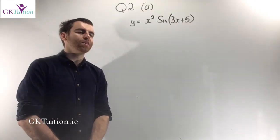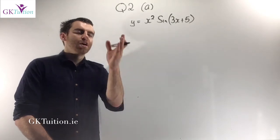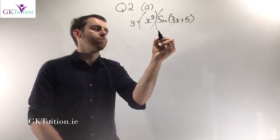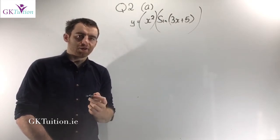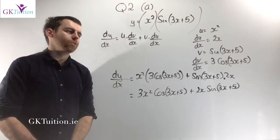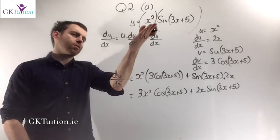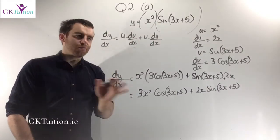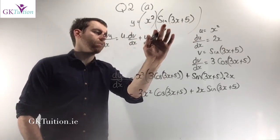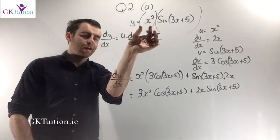The first part of question 2 asks you to get the derivative of x squared times sine of 3x plus 5, worth five marks. You have one variable x squared multiplied by another variable sine 3x plus 5, so you use the product rule. Some students grouped x squared with the sine — you must never split sine from its angle. Sine, cos, or tan — whatever comes after is the angle, so your v must be sine 3x plus 5.